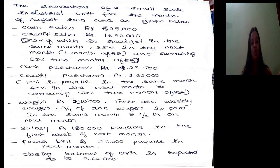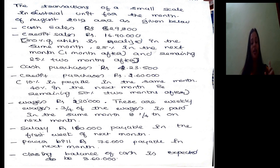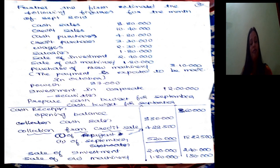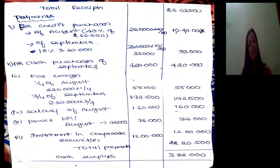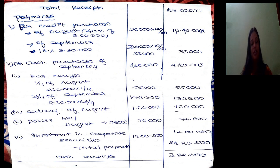For wages: referring to August — these are weekly wages, 3/4 paid in the same month and 1/4 in the next month. So 1/4 of August wages (1/4 of Rs 2,20,000 = Rs 55,000) will be paid in September. Applying the same rule to September, 3/4 of September wages will be paid in September itself, which is Rs 1,72,500. Total wages paid in September = Rs 55,000 + Rs 1,72,500.